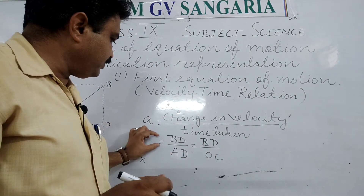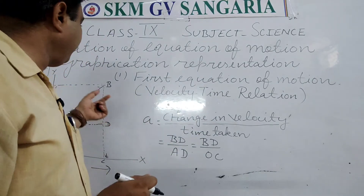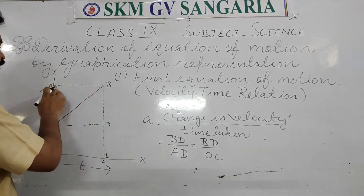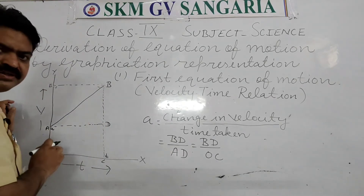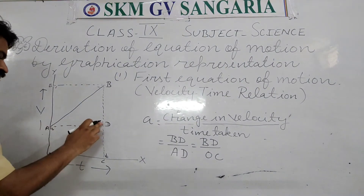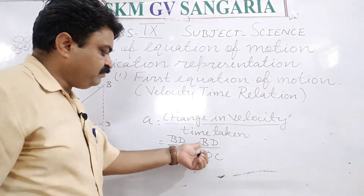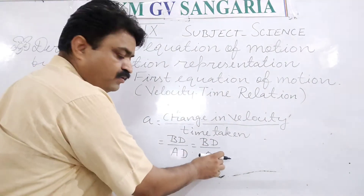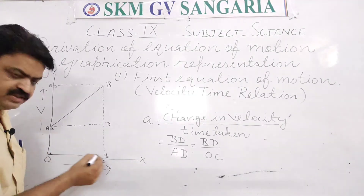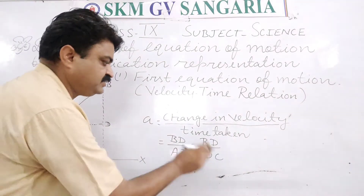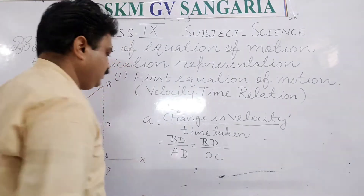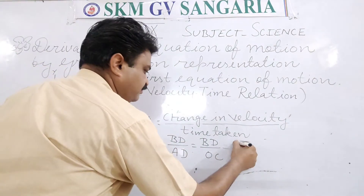The change in velocity can be indicated with the help of this graph. BD can show the change in velocity, because B represents final velocity and D represents initial velocity. So acceleration equals BD upon AD. AD is indicating the time, and we can also write it as BD upon OC, where OC on the x-axis is indicating the time.